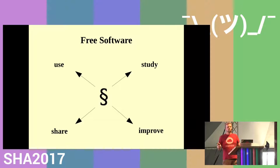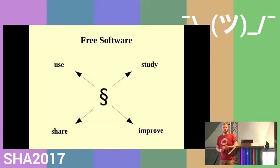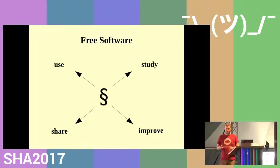So what is free software? Free software is all the software that gives users the four freedoms: the freedom to use the software for any purpose, to study the software — which basically means you can see the source code — to share the software, and to improve the software, meaning you can change the source code and publish an improved version. This is free software.